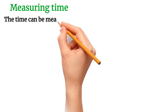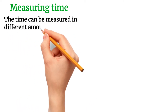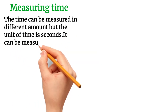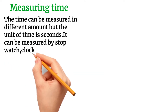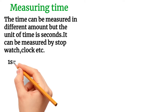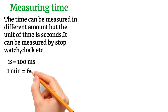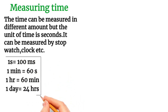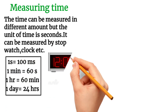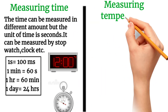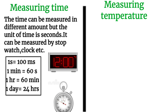Time can be measured in different units, but the standard unit of time is seconds. It can be measured using a stopwatch or stop clock. One second is equal to 1000 milliseconds. One minute is equal to 60 seconds. One hour is equal to 60 minutes. One day is equal to 24 hours. You can see the digital clock and stopwatch which help to measure time.